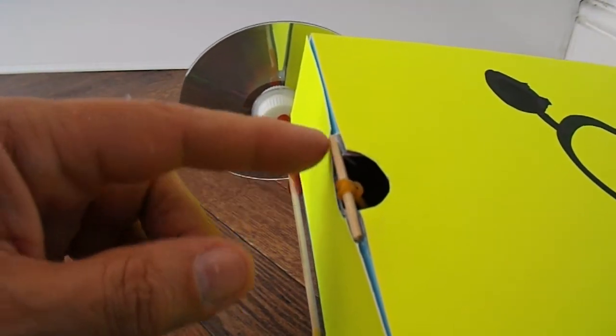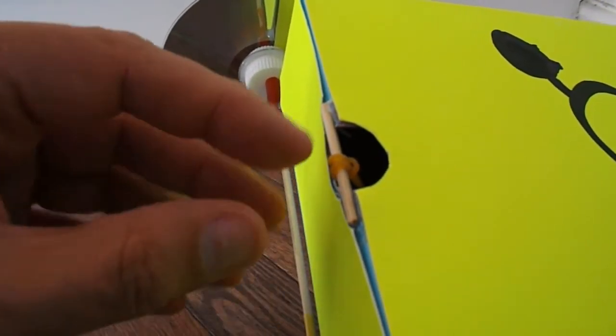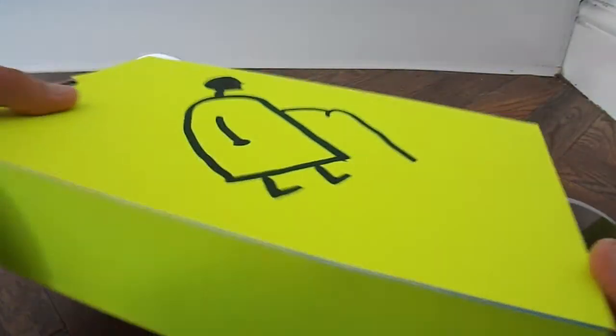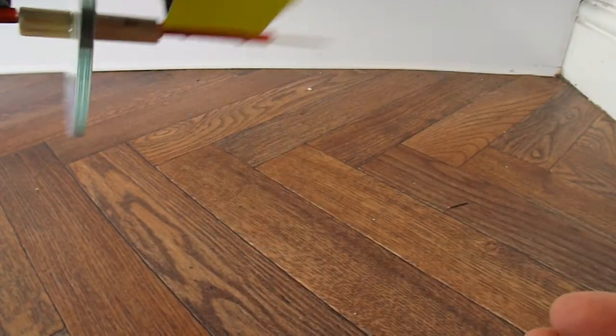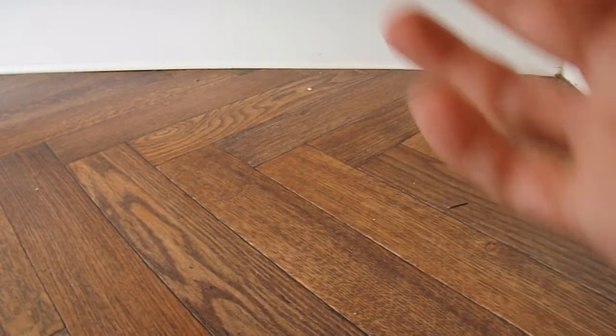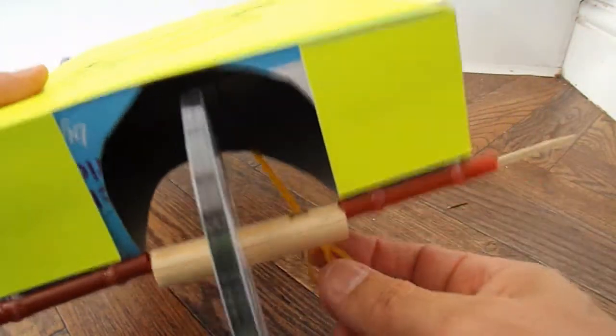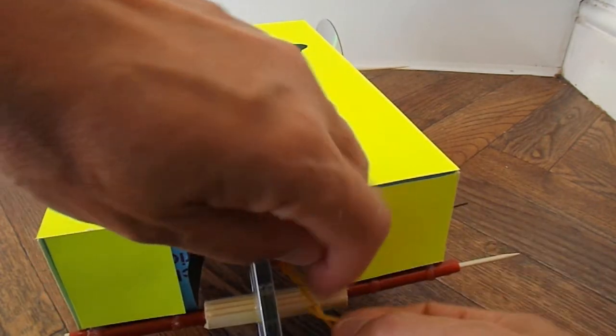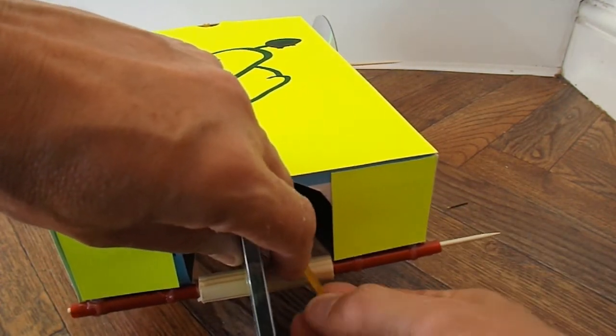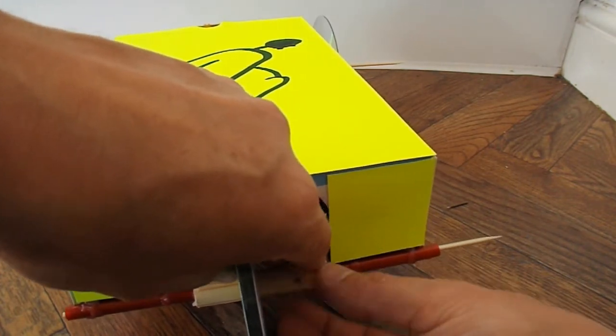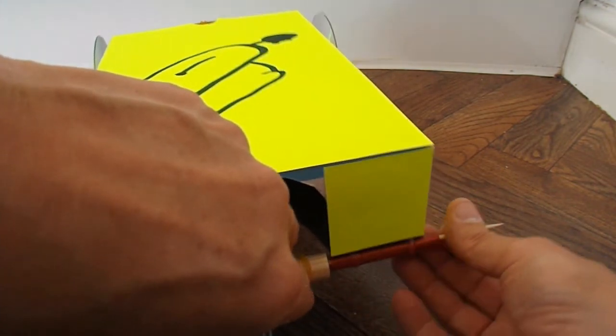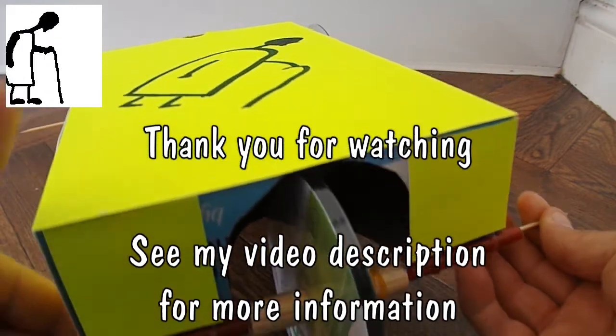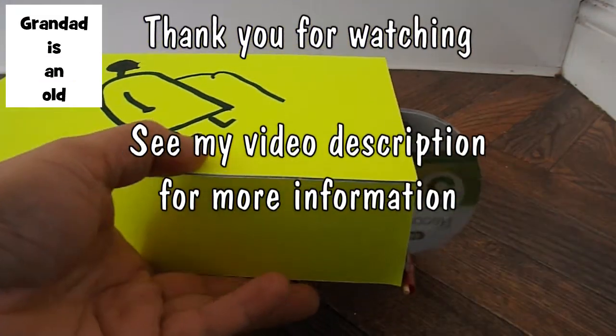Little hole at the front with a bit of barbecue skewer across it with the rubber band connected to it. The rubber band goes right through the middle of the box. Comes out the back if you're lucky. There it is. And we just connect it onto that little bit of barbecue skewer I've put on the back axle there. So there we go. Job done.